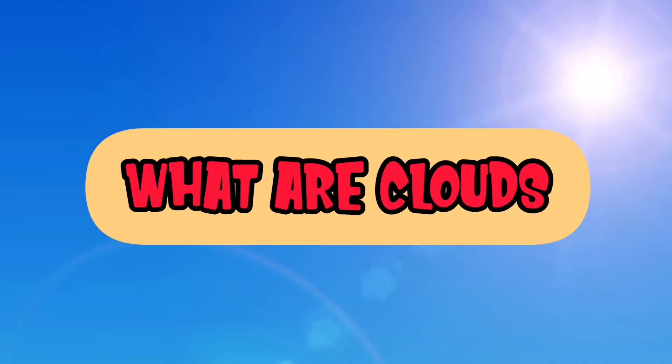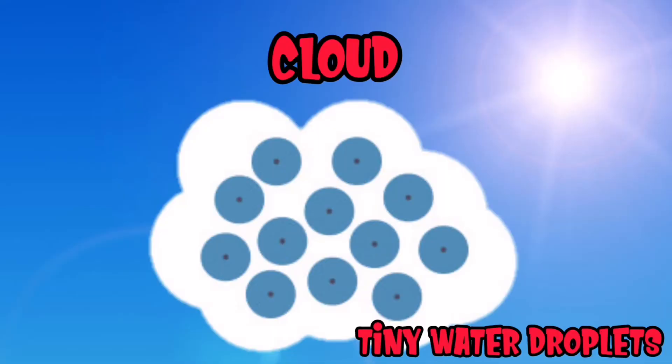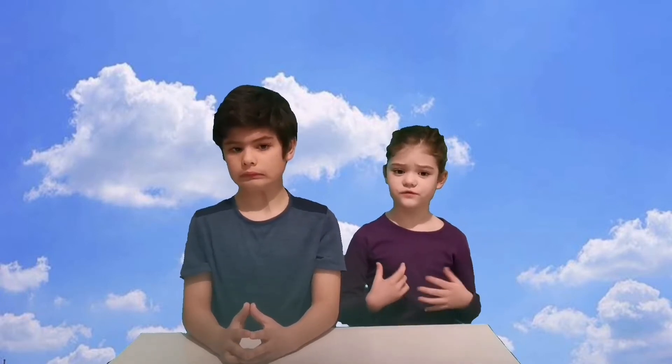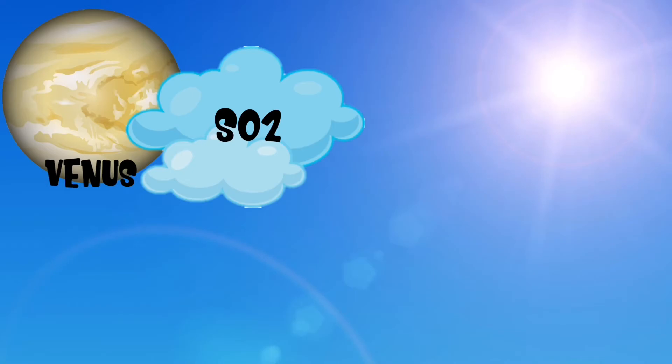So what are clouds? A cloud is a large group of tiny water droplets that we can see in the air. Clouds can contain millions of tons of water. Clouds can also be made of other chemicals. Other planets in our solar system have clouds. Venus has thick clouds of sulfur dioxide. While Jupiter and Saturn have clouds of ammonia.